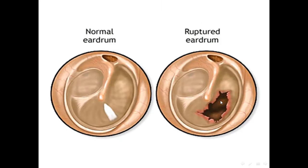This is the ruptured tympanic membrane, and this is a normal tympanic membrane showing the pars flaccida, pars tensa, the handle of the malleus, the umbo, and the cone of light.